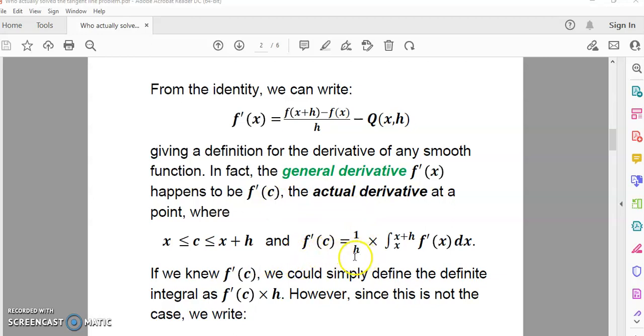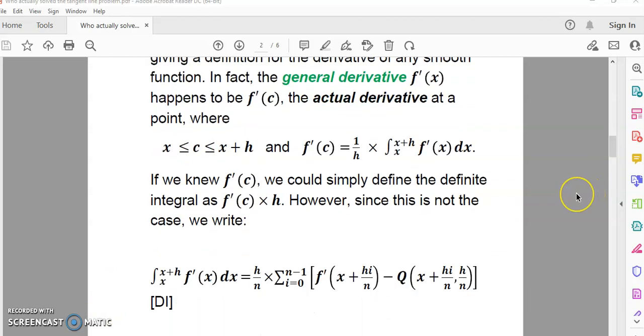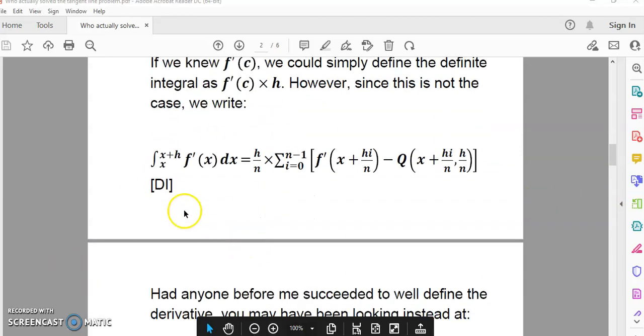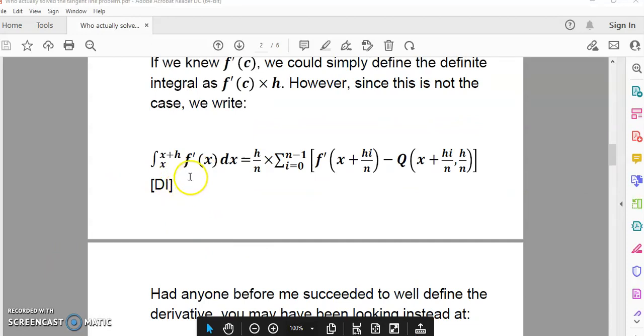For example, here what you have is f prime of c equal to the integral divided by h. In other words, this here is the arithmetic mean of all the y ordinates in the interval x, x plus h. Now, if we knew f prime of c, we could simply define the definite integral as f prime of c times h. However, since this is not the case, we have the new definite integral definition in terms of this geometric identity. And you can see it right in front of you here. It's called DI.